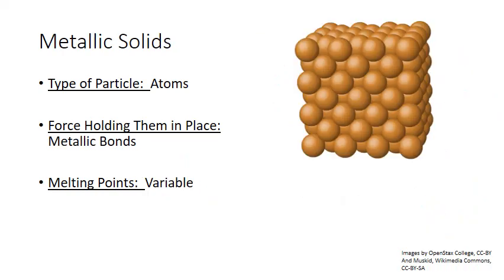So metallic solids are also made up of individual atoms. The forces that hold metal atoms together, though, are metallic bonds. And metallic bonds are a little different than ionic or covalent bonds.